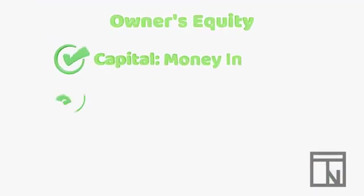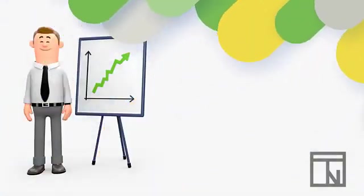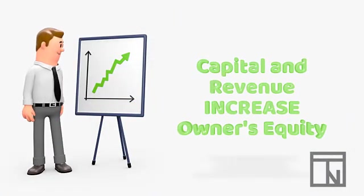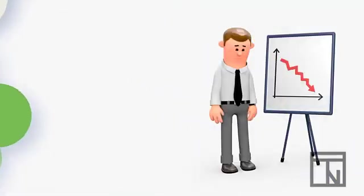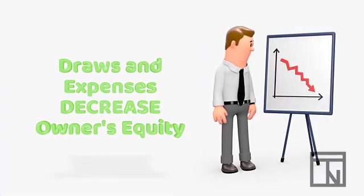So, there are the four main parts of owner's equity: capital, when owners put money in; draws, when owners take money out; revenue, when the business earns money; and expenses, when the business spends money on operations. Remember that capital and revenue always increase owner's equity, while draws and expenses always decrease owner's equity.